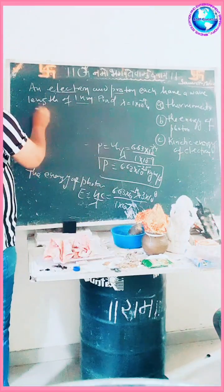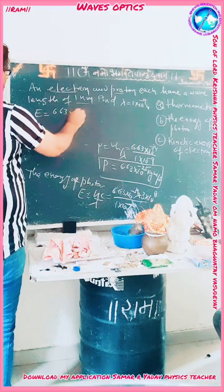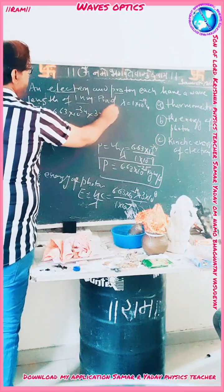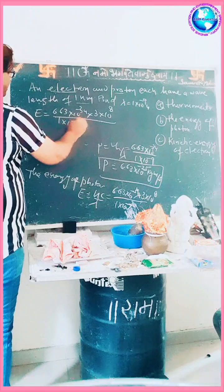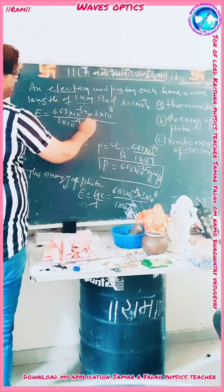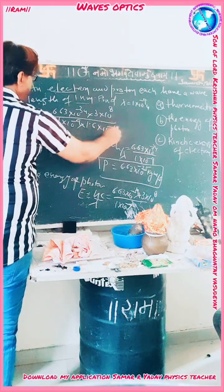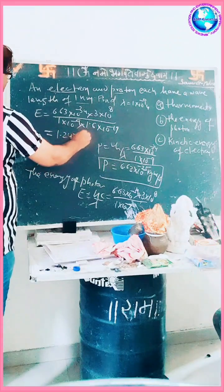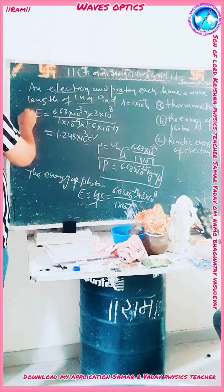Therefore, E = (6.63 × 10⁻³⁴ × 3 × 10⁸) / (1 × 10⁻⁹), which gives a value in joules. Converting to electron volts by dividing by 1.6 × 10⁻¹³ gives 1.243 × 10³ eV. This is the energy of the photon.